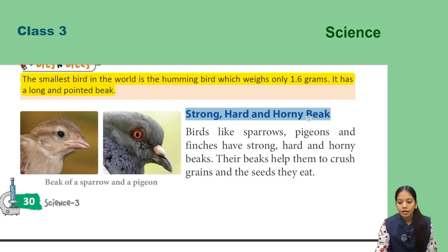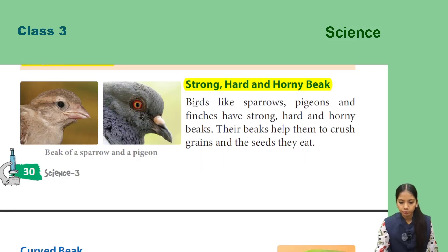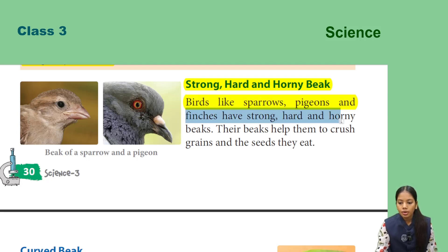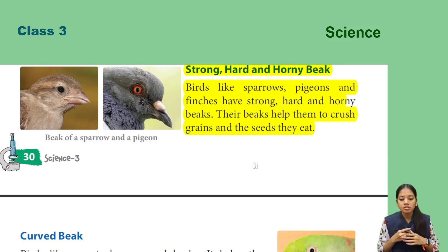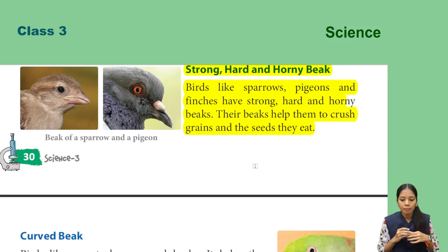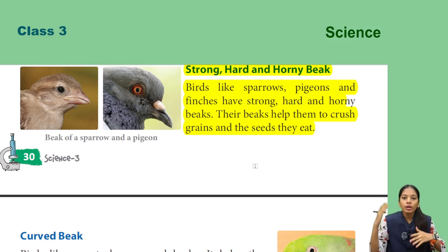Next, let's read about the strong, hard and horny beak. Birds like sparrows, pigeons, and finches have strong, hard, and horny beaks. Their beaks help them to crush the grains and seeds they eat. So these birds have strong, hard, and horny beaks that help them crush grains and seeds.